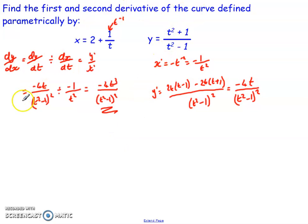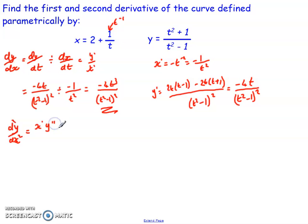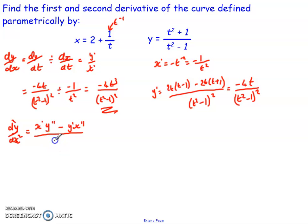For the second derivative of the curve defined parametrically, remember we've got a formula for that. The second derivative d²y/dx² — think of it in terms of x-dashed and y-dashed — is x-dashed times y-double-dashed, take away y-dashed times x-double-dashed, all over x-dashed cubed. So all I need to do is get my two second derivatives, work it through from there.